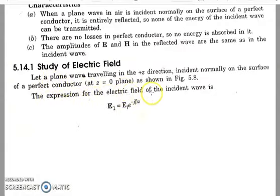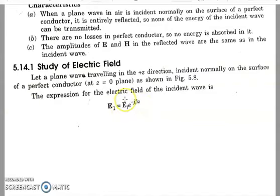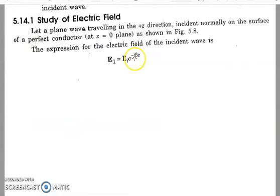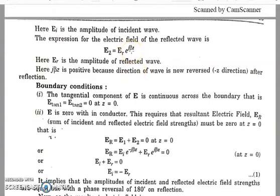The expression for the electric field of the incident wave is denoted E1, where E1 = Ei · e^(−jβz). Here β is the phase shift constant, z represents the direction of propagation, and Ei is the amplitude of the incident wave. The expression for the reflected wave is E2 = Er · e^(+jβz). The sign change from −jβz to +jβz reflects only the phase shift; Er is the amplitude of the reflected wave, and the positive exponent indicates the wave direction is now reversed, i.e., in the −z direction.